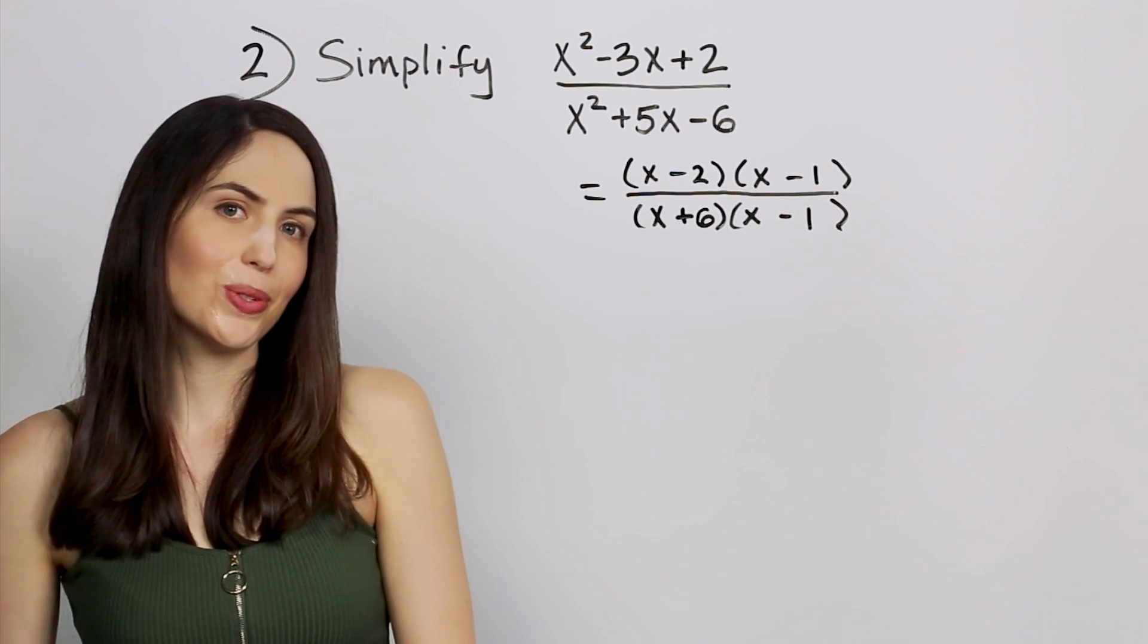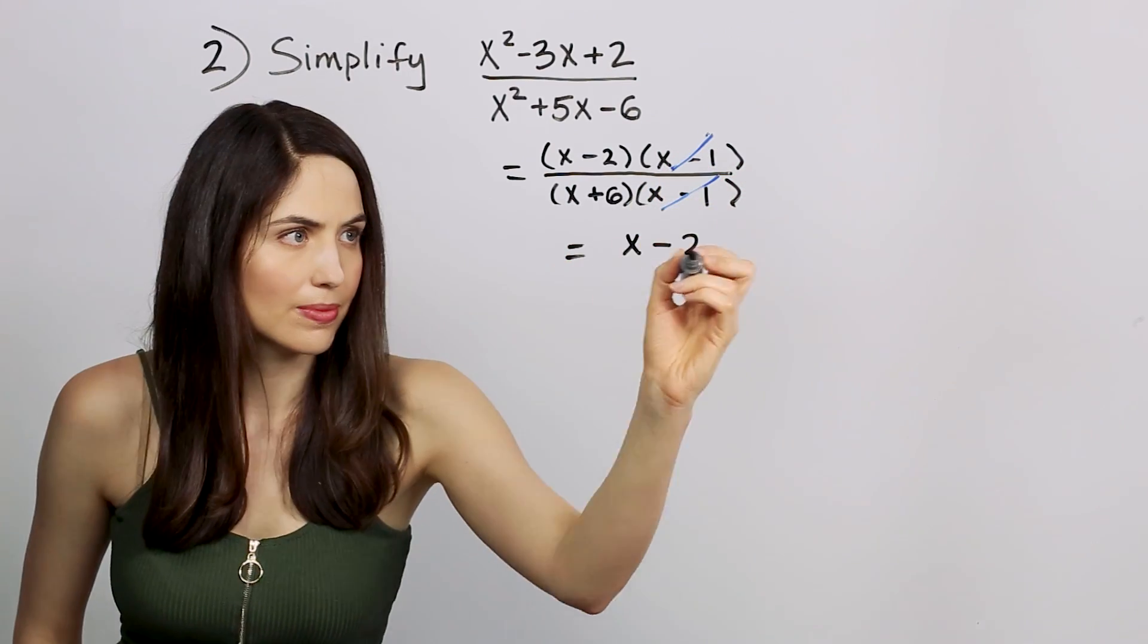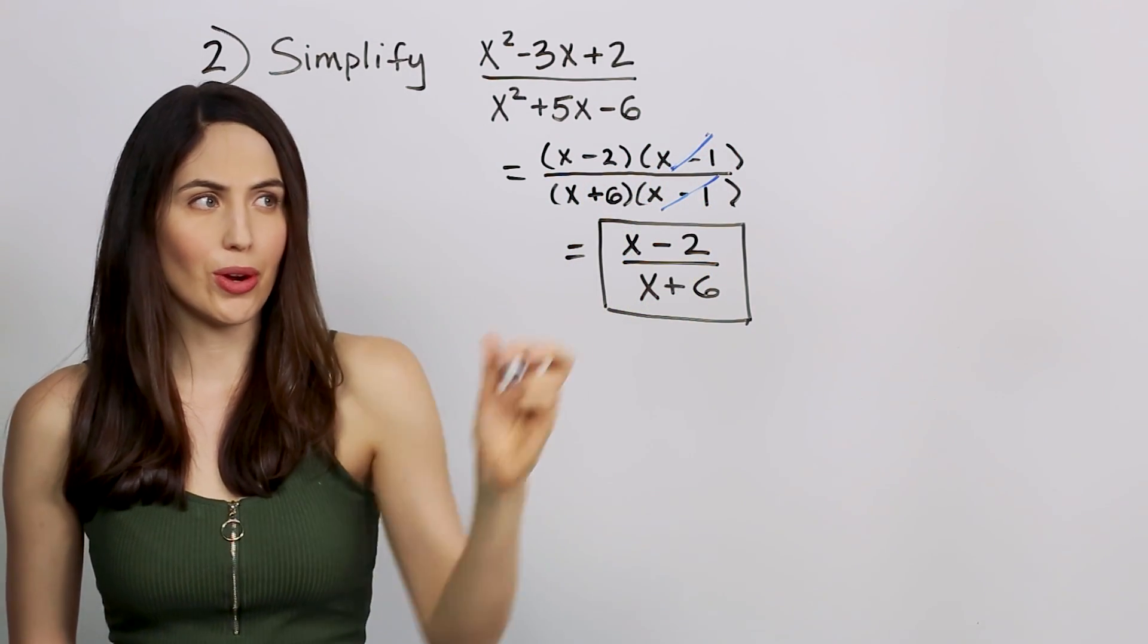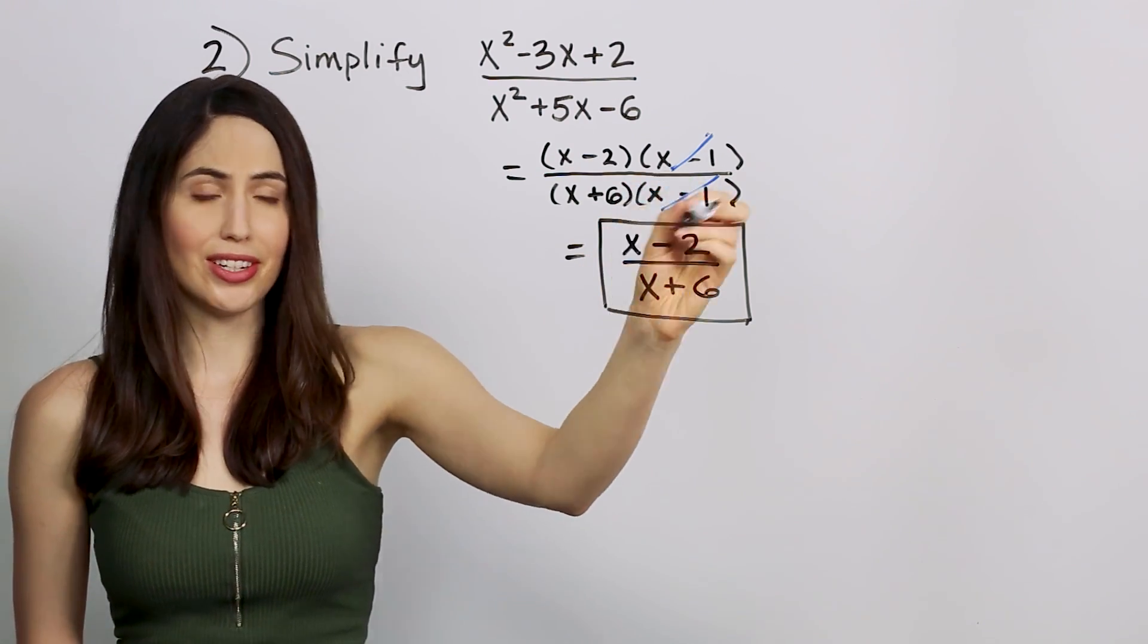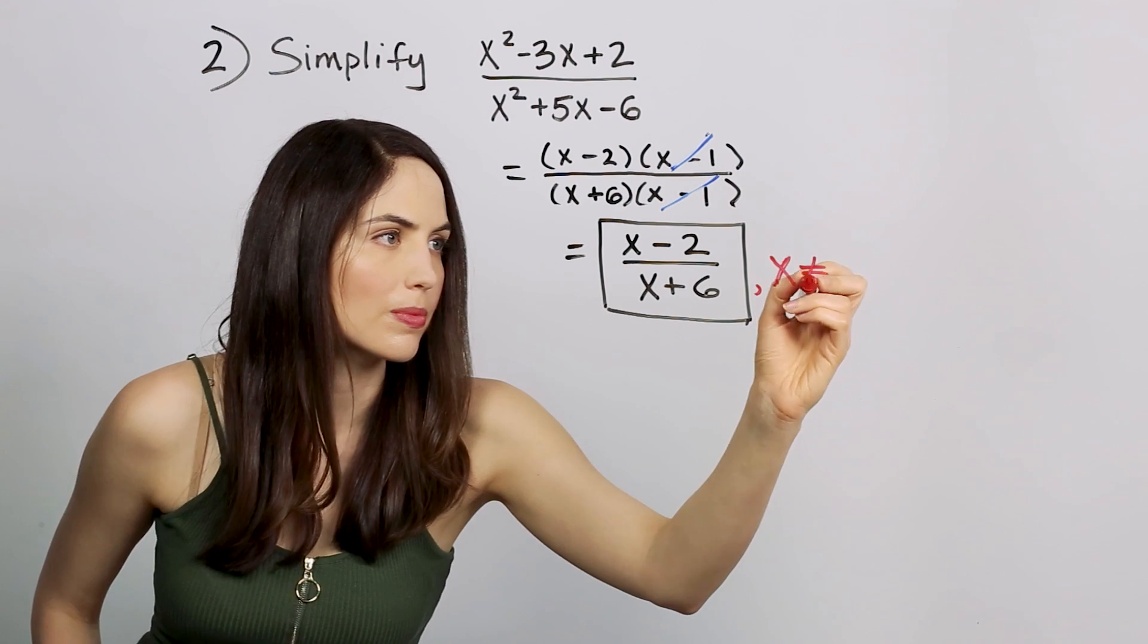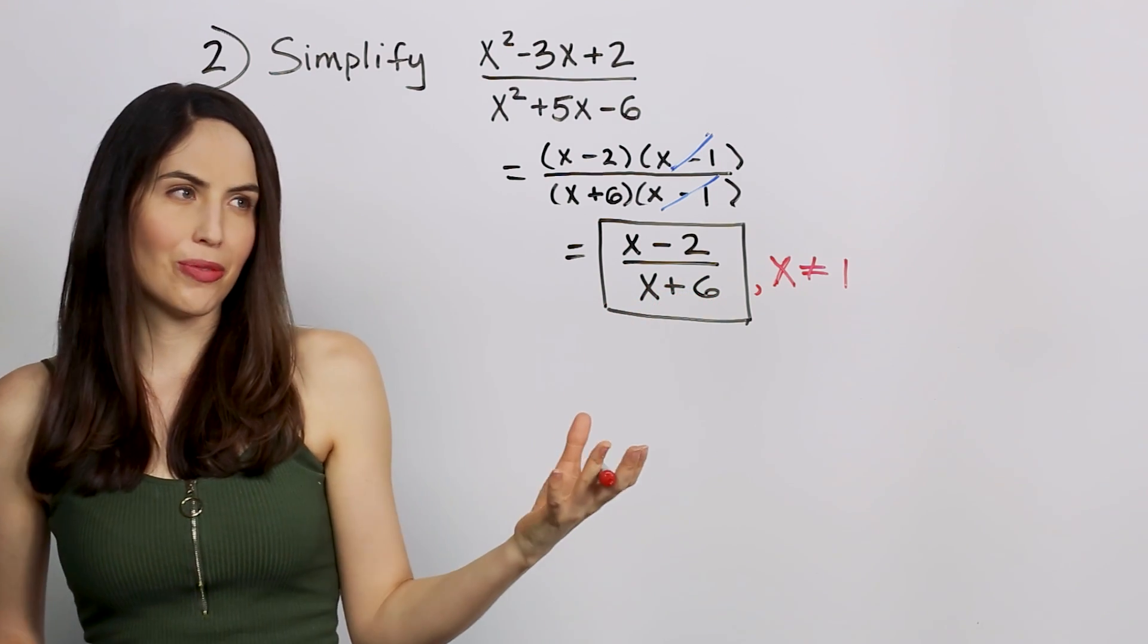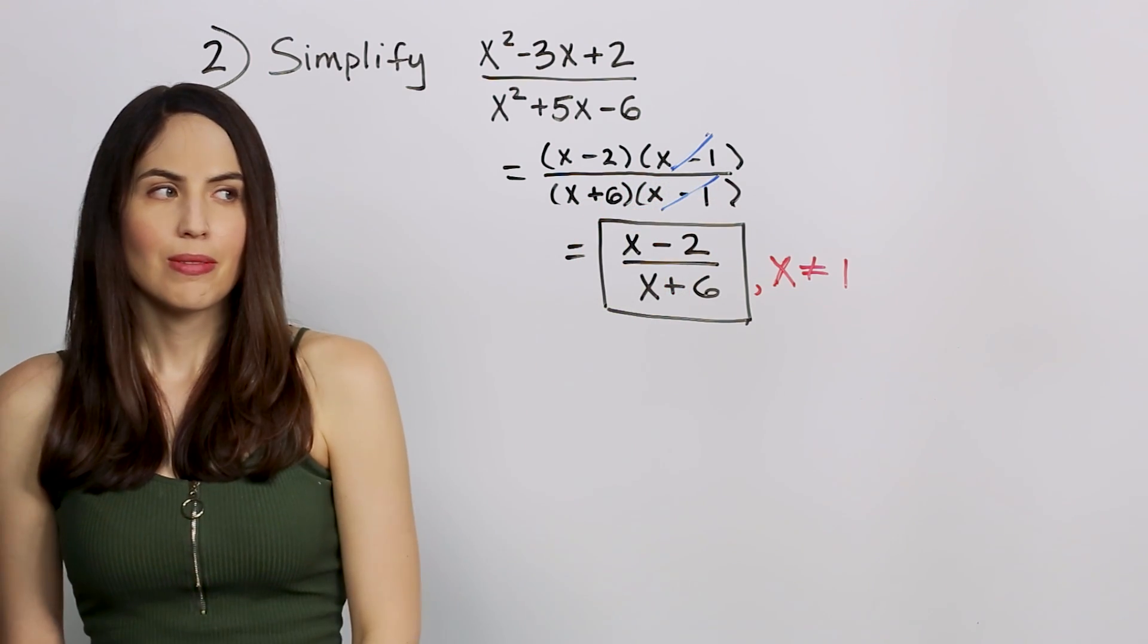I'm sure you all know the next step is to cancel what's the same on top and bottom. So there's the answer, and maybe you've already thought of it, but if we cancel a factor top and bottom, we need to write a condition for whatever made that bottom factor equal to 0. So x equals 1 used to make that factor 0, so we need to write a condition at the end that x can't equal 1. And it's really the moment that you cancel factors that the restriction kicks in, so if you can make a little mental note for yourself when you cancel something, remember what value would have made it 0 and make sure to put that at the end.